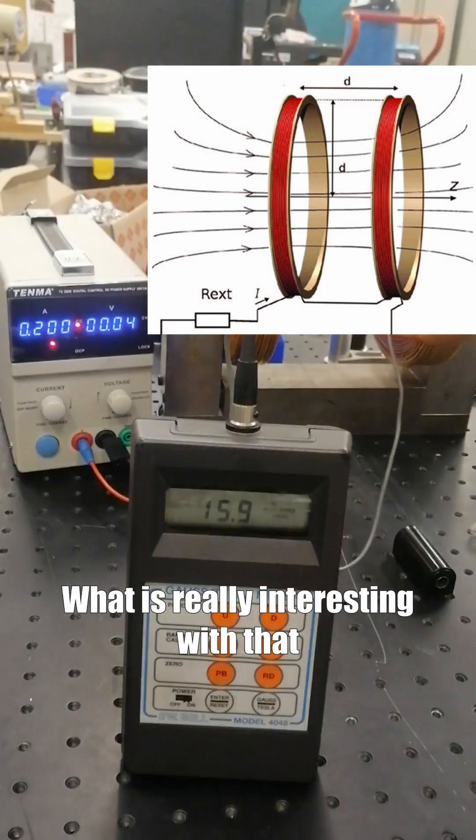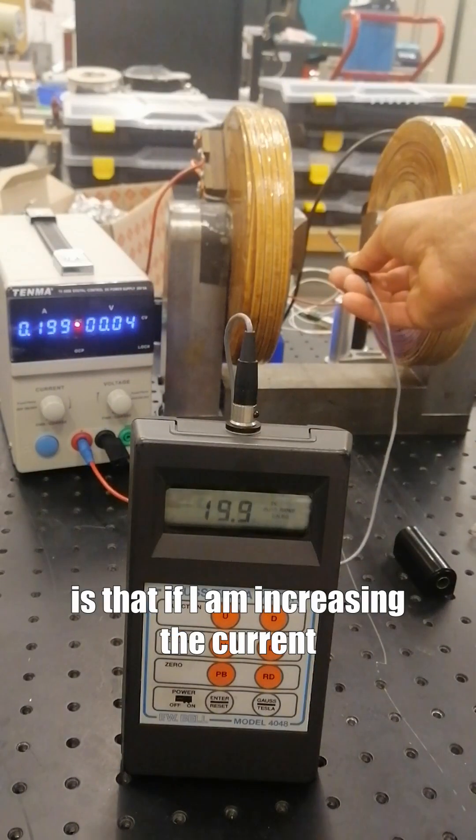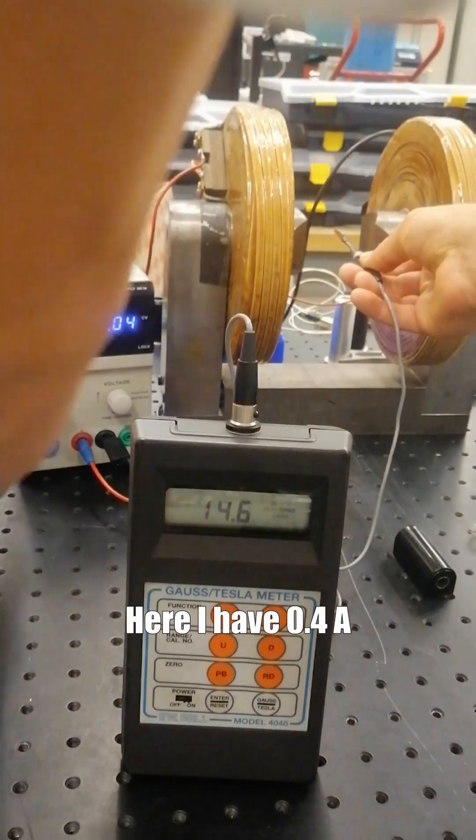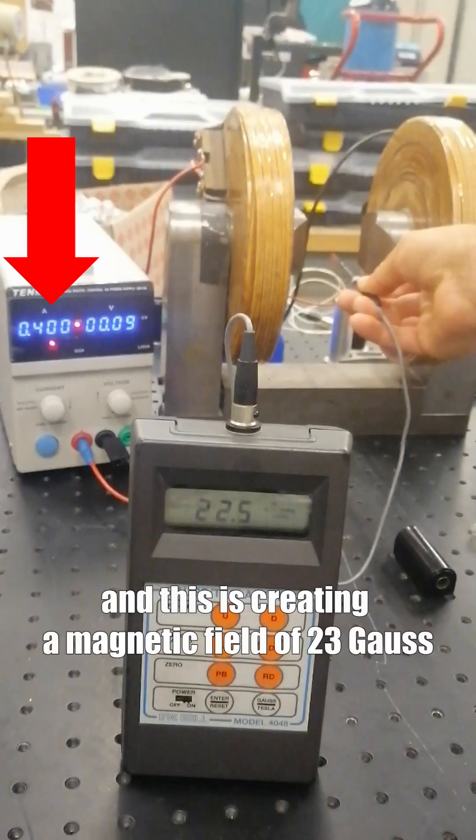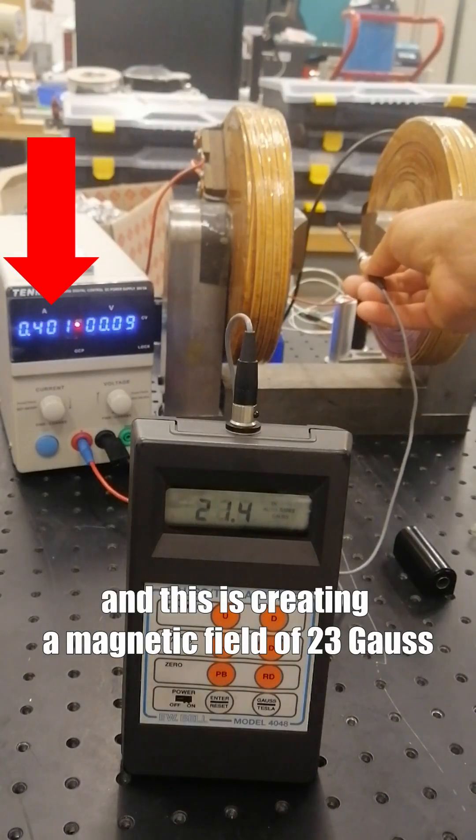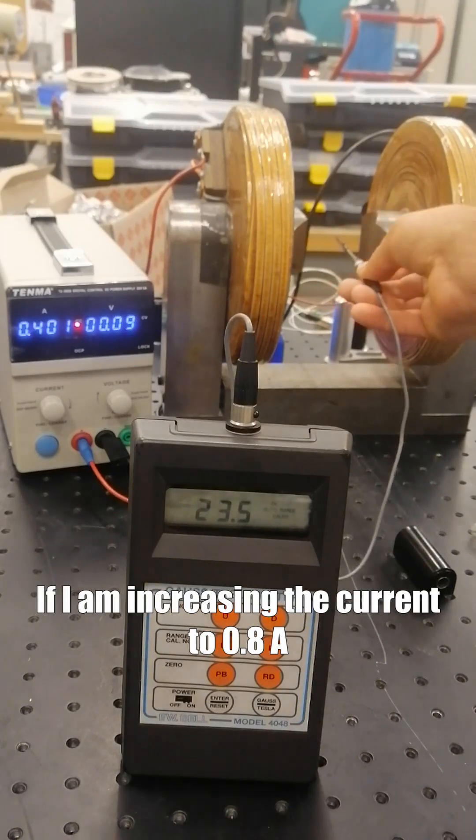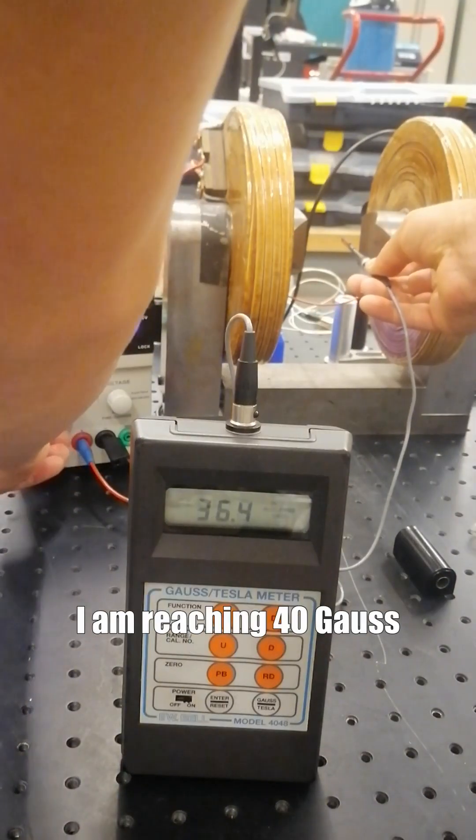What is really interesting is that if I'm increasing the current, I'm also increasing the magnetic field. Here, I have 0.4 amperes and this is creating a magnetic field of 23 Gauss. If I'm increasing the current to 0.8 amperes, I'm reaching 40 Gauss.